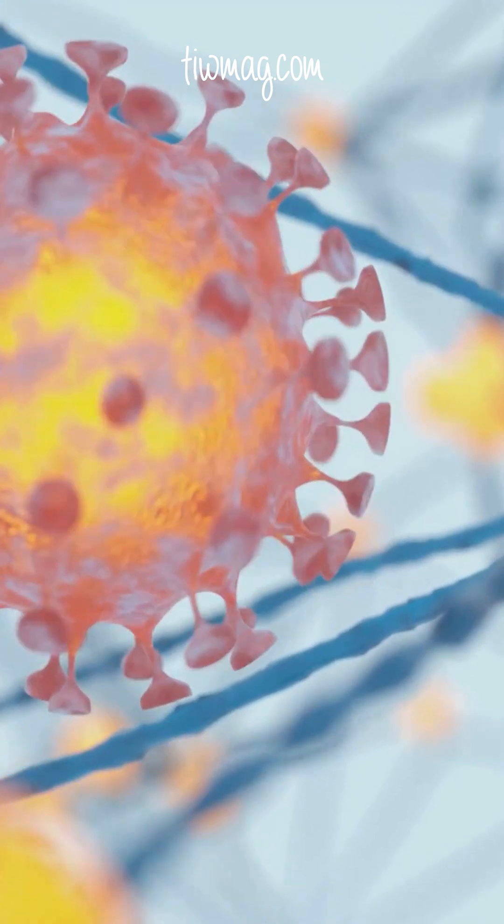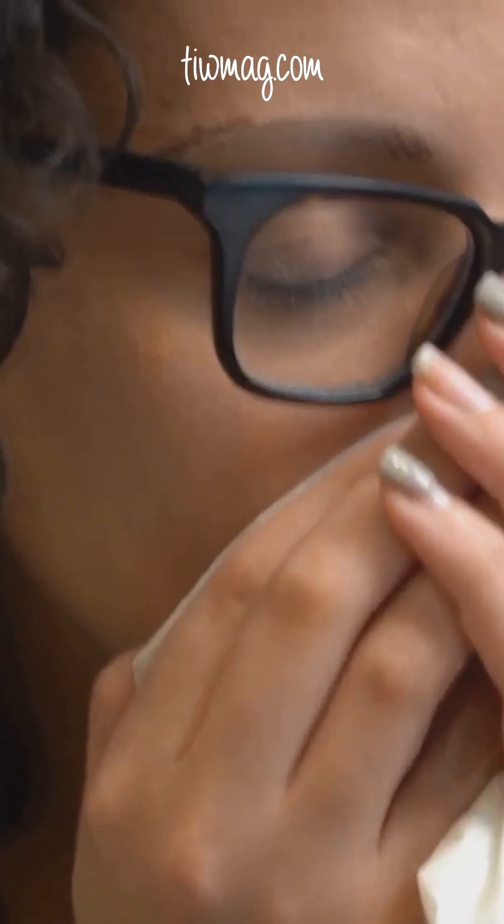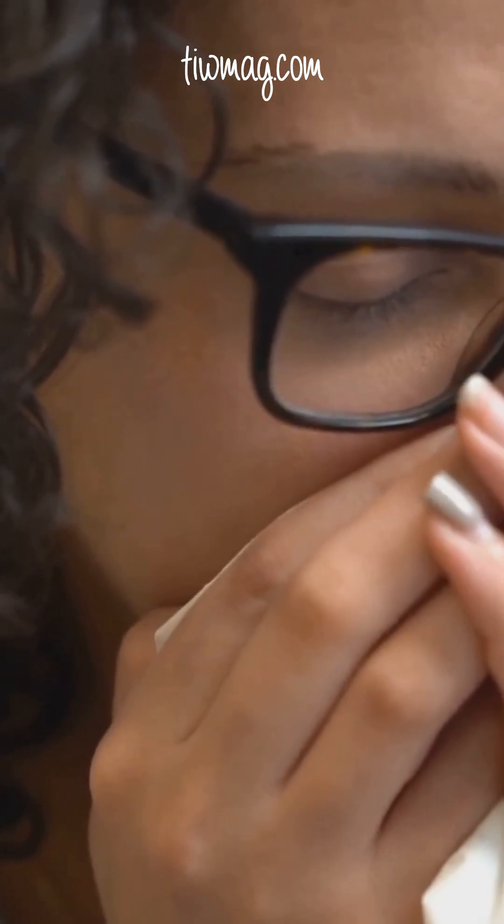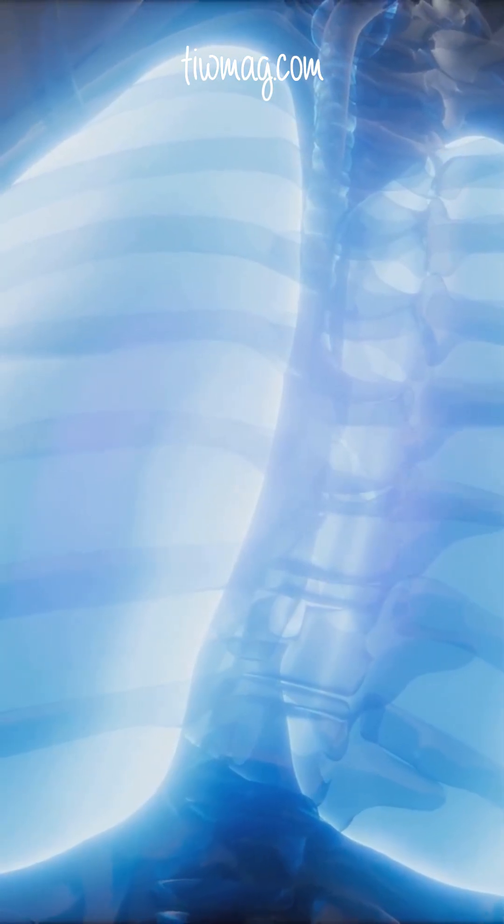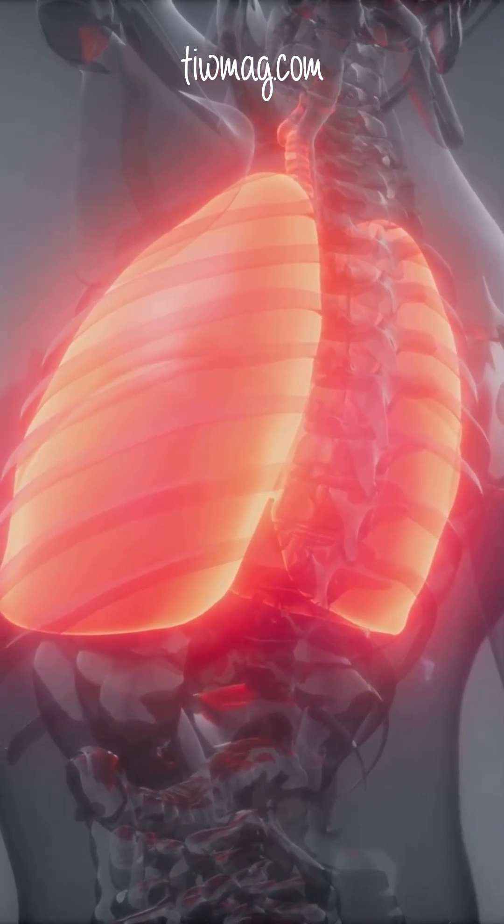Environmental triggers—respiratory viruses, new allergen exposures, workplace irritants, indoor pollutants, and smoking or secondhand smoke—can injure the airway epithelium, lowering its barrier function and priming dendritic cells to drive chronic inflammation.